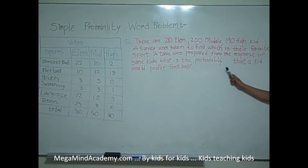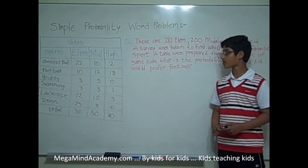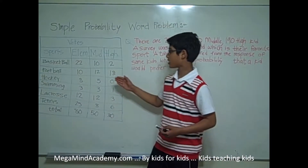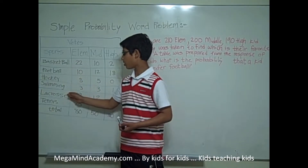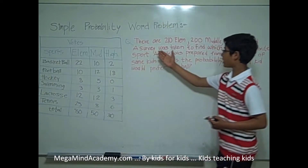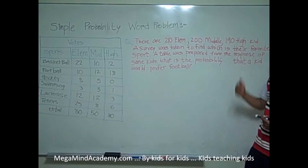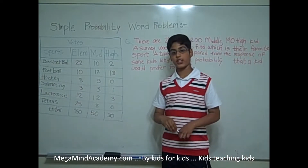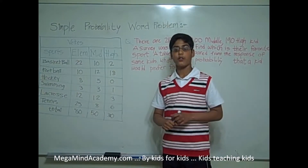What is the probability that a kid would prefer football? Well, we have our six sports: basketball, football, hockey, swimming, lacrosse, and tennis. Out of the total kids in elementary school, middle school, and high school, only some of the kids were interviewed for the survey. Let's find out how many kids were interviewed for the survey.